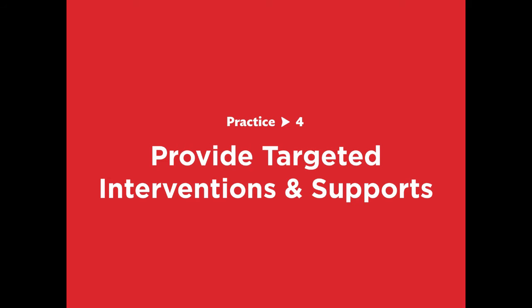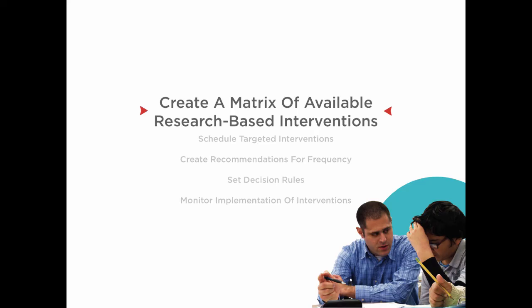Practice four: create a system for providing targeted interventions and supports. A strong tiered system of support allows us to design our system that makes possible the time, resources, robust practices, and monitoring needed in order for the multitude of needs to be met in schools. This allows our resources to be used effectively and efficiently while not removing important ownership from the student's first and primary teacher. Create a matrix of available research-based interventions, like the SWIFT tiered intervention matrix, thinking about interventions we have access to that can be used for small group instruction.